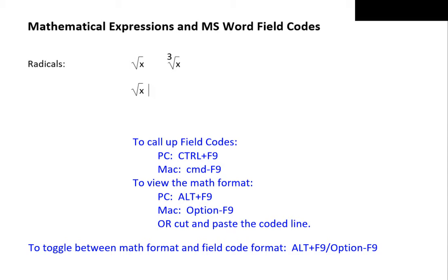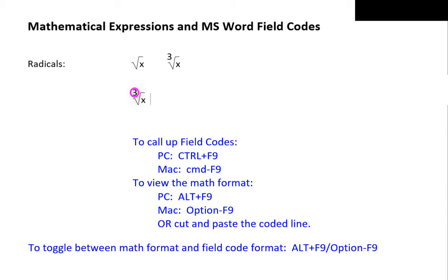If you want a different root like the cube root of x, we start the radical all the way up to the opening parenthesis. We indicate the cube root by typing 3 right after the opening parenthesis, then a comma, then x. Don't forget to close the parenthesis. Cut and paste, and we have the cube root of x. Typically the index of a radical is written in a smaller font. We can change the font size for 3 to make it smaller: toggle to field code mode, highlight 3, and reduce its font size by pressing Ctrl+Shift+< three times — reducing the font size of the index 3 by three steps. Then toggle out.